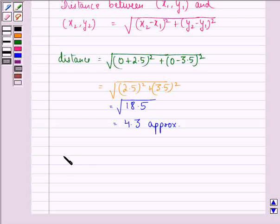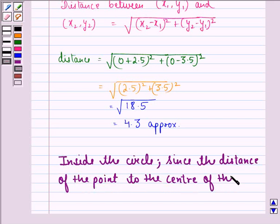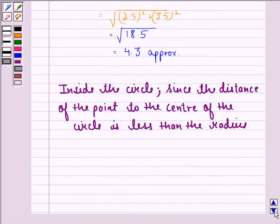So, our answer to the question is that the point lies inside the circle since the distance of the point to the center of the circle is less than the radius of the circle.